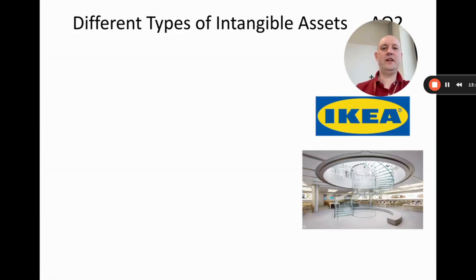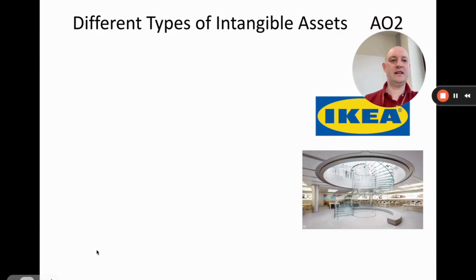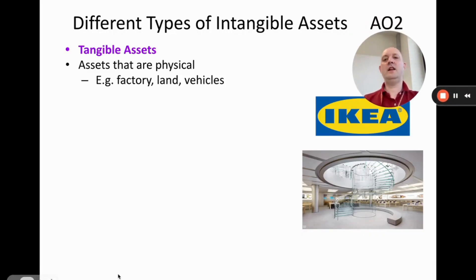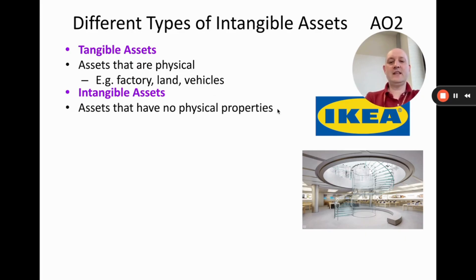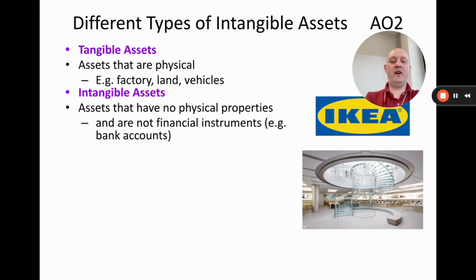The final topic is different types of intangible assets. Tangible assets are physical — you can touch them — such as factories, land, and vehicles. Intangible assets have value but no physical substance; we can't touch them. Importantly, these are not financial instruments — so money in a bank account, while untouchable, would not be classified as an intangible asset.